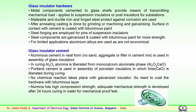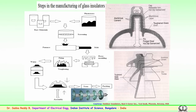There are no chemical reactions taking place because of the galvanized insulator, which is why the hardware is coated with a bituminous layer. Alumina, which has very high compression strength, develops adequate mechanical strength after 24 hours of curing in water, followed by a mechanical proof test. This is how the insulator hardware is fixed to the glass shells in the manufacturing stage.